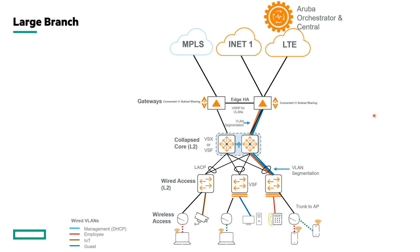Let's start our topology review with the large branch, looking at this top to bottom. We manage branches with both Aruba Central for switching and wireless, and Aruba Orchestrator for our SD-WAN solutions. At large branches, customers generally have more than two circuits — sometimes a traditional MPLS, commodity internet circuits, and possibly an LTE or 5G backup. From a gateway perspective, they'll have high availability with two gateways spreading circuits between them for redundancy. The branch is completely layer two, so default gateways exist on the EdgeConnects, with VRRP running for default gateway redundancy.